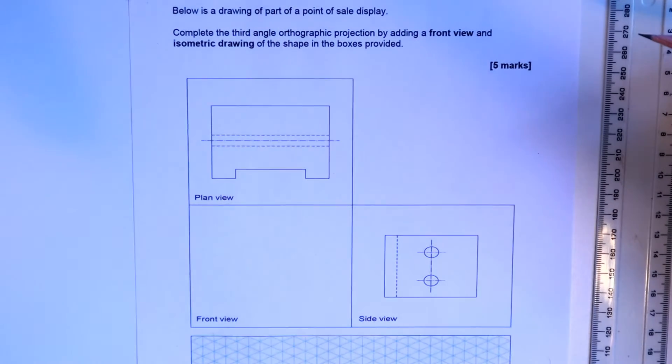For this exam question, it says below is a drawing of a part of a point of sale display. Complete the third angle orthographic projection by adding a front view and an isometric drawing of the shape in the boxes provided. So this is a two-part question.